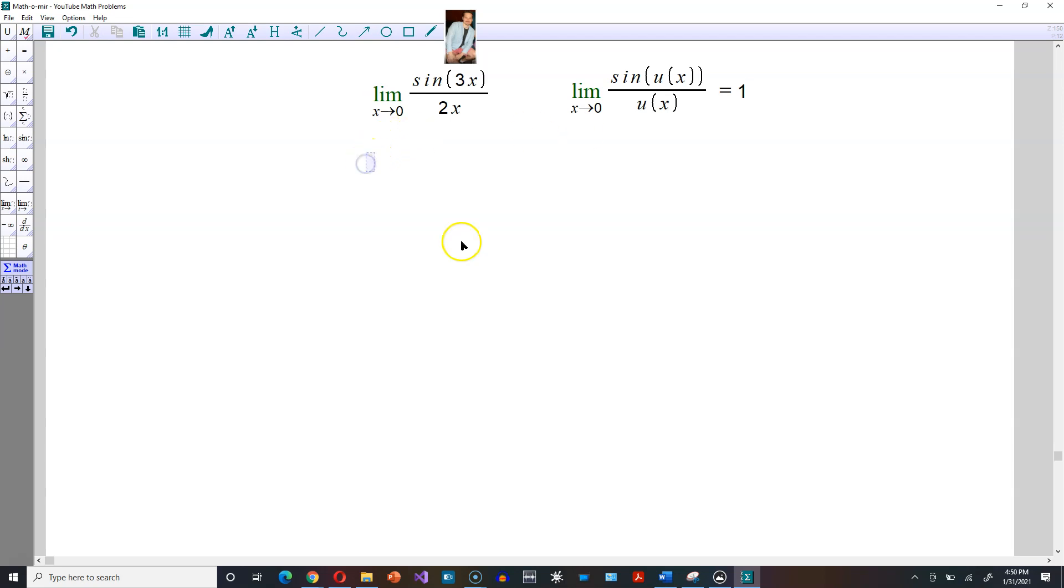We're going to make use of that here. I need to have the bottom the same as what's inside the parentheses, so I can do that by multiplying by the number 1. The limit as x approaches 0, and within this position I'm going to multiply by 3 over 3, which is really just 1, and then sine of 3x divided by 2x.